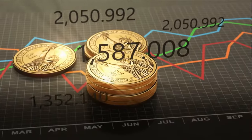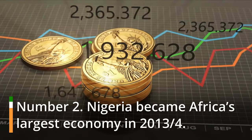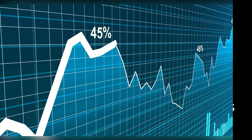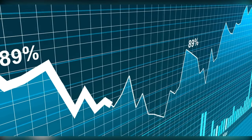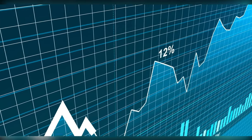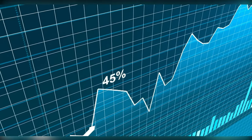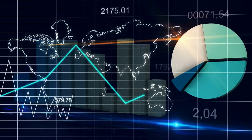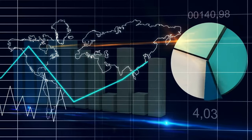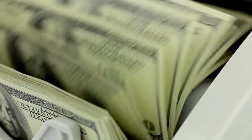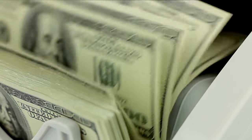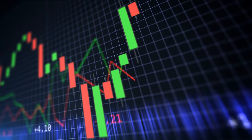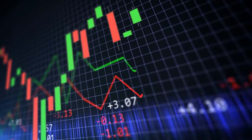Nigeria became Africa's largest economy in 2014. In April 2014, looking back at the previous financial year, the Statistics Bureau of Nigeria confirmed the rebasing of the Nigerian economy's gross domestic product (GDP) to 509.9 billion dollars. This placed it well above South Africa's nominal GDP of 322 billion dollars, elevating Nigeria to the position of the largest economy in Africa.